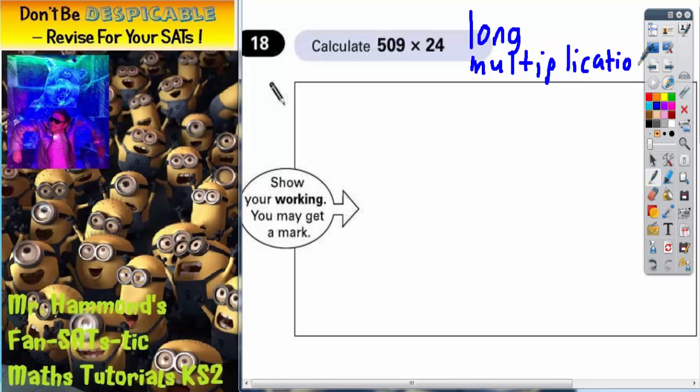And we're going to use a method called the magic zero method, which will become clear as we go on. So the first thing we've got to do is actually set this calculation up. So we set it up like this, 509 multiplied by 24. Now you will need three lines for your working out. So let's put those three lines in.